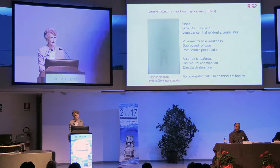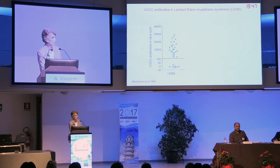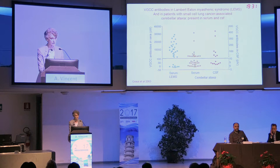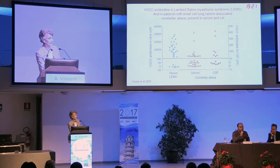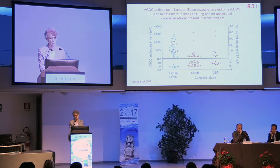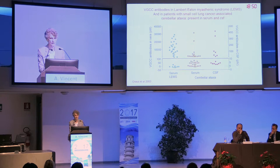This is an antibody worth looking for in cerebellar ataxia. Here are antibody levels in patients with Lambert-Eaton Myasthenic Syndrome, and here are antibodies in patients with small cell lung cancer-associated cerebellar ataxia. The antibody levels are reasonably high in patients' serum. They are also present in the CSF - there's about an 80-fold difference in the range - but that is more than would get into the cerebrospinal fluid just by diffusion, so some antibodies are being made within the brain compartment.